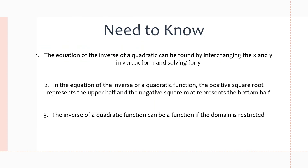Just really quickly, here's a list of things that you do need to know before we get into the examples. The first thing is the equation of the inverse of a quadratic function can be found by interchanging the x and y in vertex form and solving for y. The key thing is that it always has to be in vertex form, and we'll see that in one of the examples.